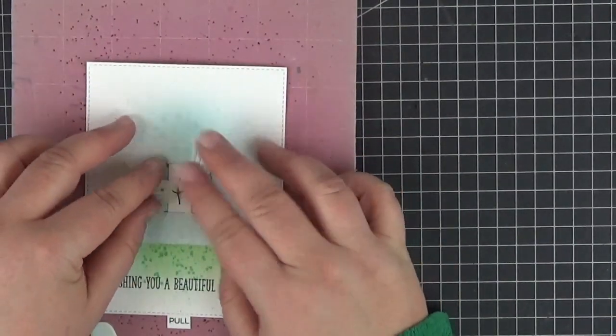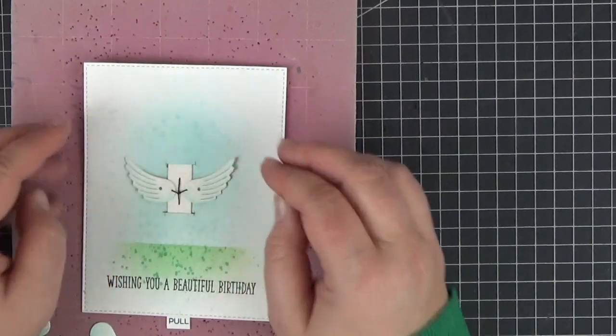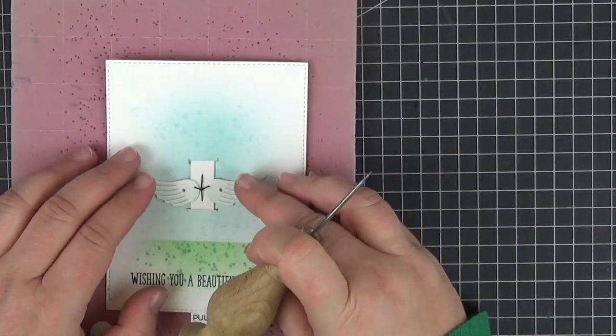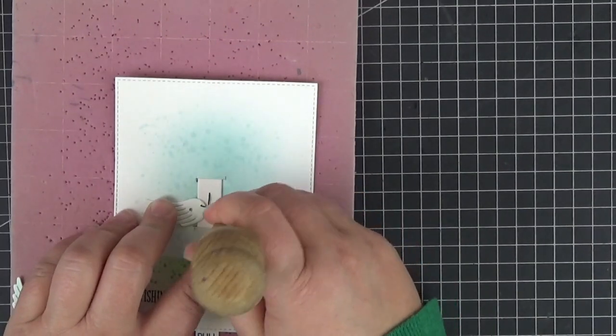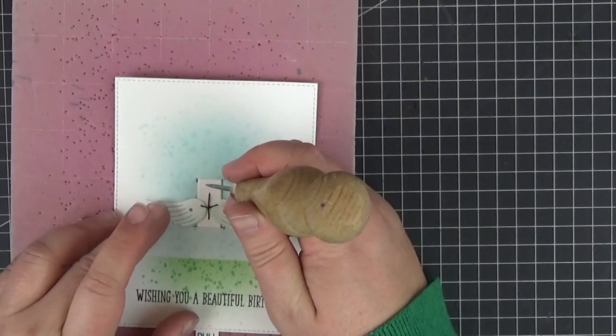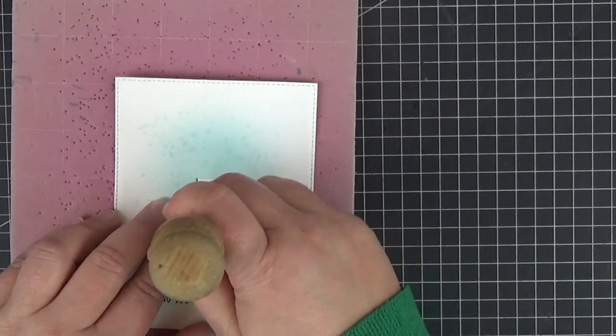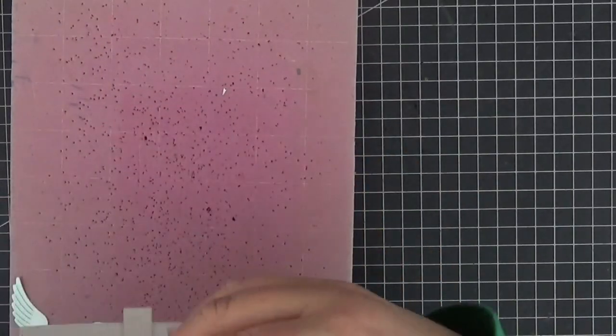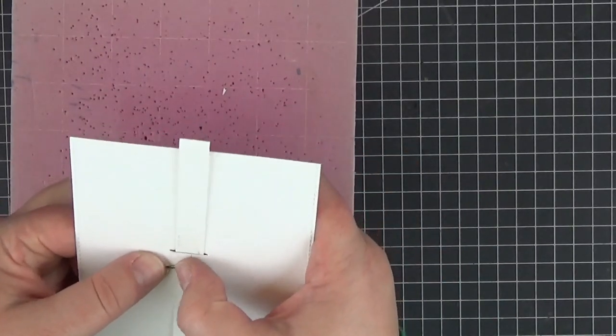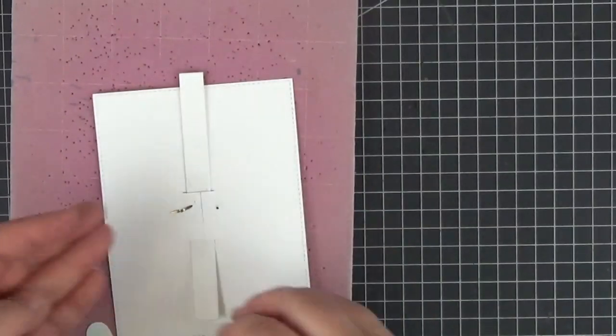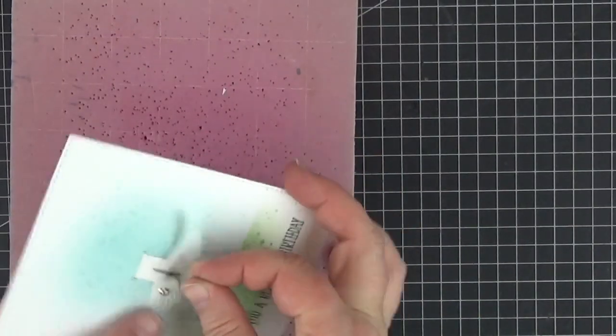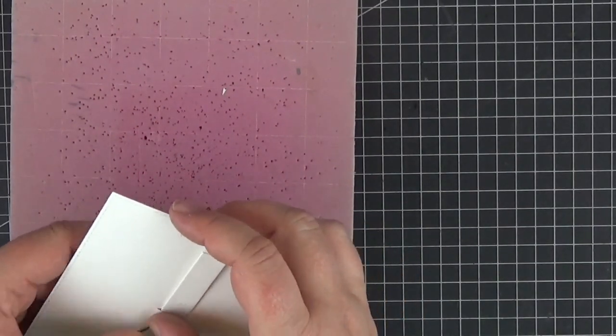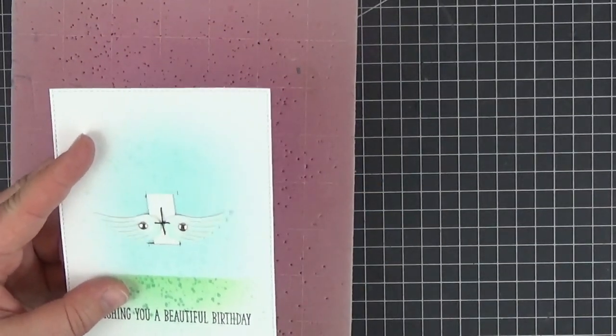Once we manage to do that we can link the wings to the panel with some mini brads. Before punching the holes in the panel remember to adjust the wings to their starting position. When we pull on the tab they will move upwards so put them in an almost horizontal position. I'm using these silver mini brads that you can find in the MFT store but white ones would be even better. After inserting them and linking the wings to the panel we of course need to check that they are working properly before moving on.